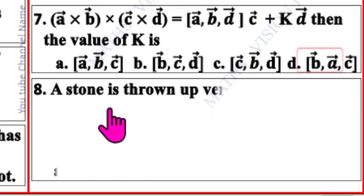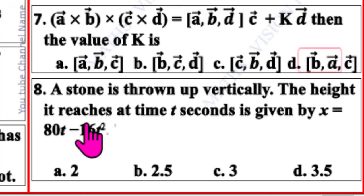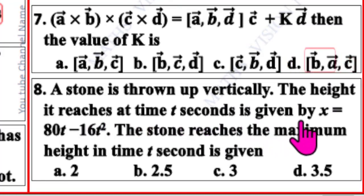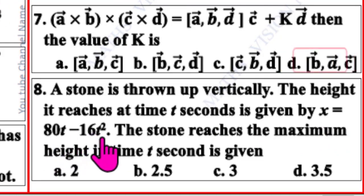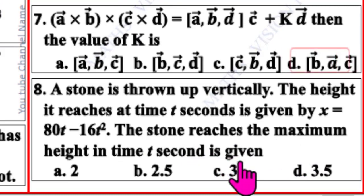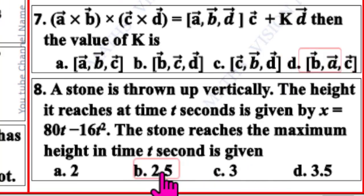Eighth question. A stone is thrown up vertically. The height it reaches at time t seconds is given by x = 80t minus 16t². The stone reaches the maximum height — correct option is B: 2.5 seconds.